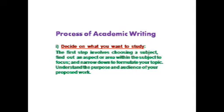The first step involves choosing a subject — deciding on what you want to study or research. Find out an aspect or area within the subject to focus on and narrow down to formulate your topic. You cannot take a vast or general subject; you need to narrow down to a particular issue. For example, you cannot take a topic like climate change — that's a very vast area. You can take one factor, maybe like the role of cyclones in determining the weather. You need to narrow down your scope of study.